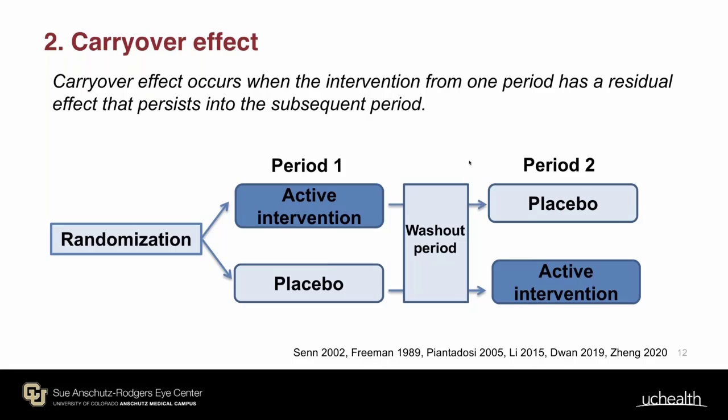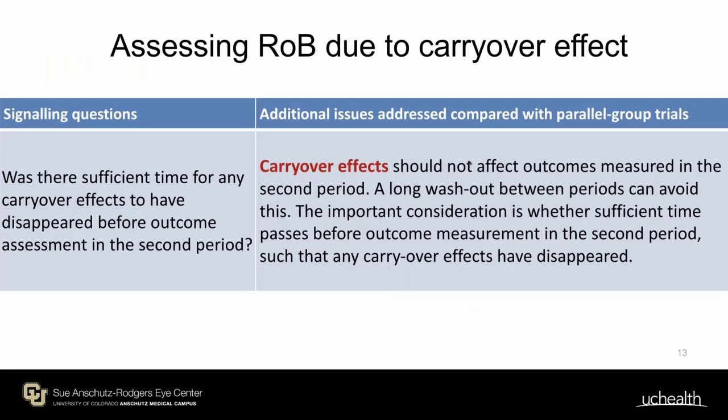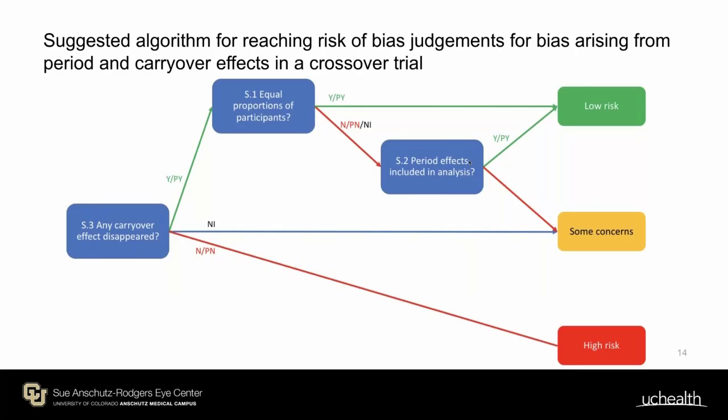When assessing bias due to carryover effect, you must consider whether there is a long enough washout period between the two periods, and whether sufficient time has passed before outcome measurement in the second phase such that any carryover effects have disappeared. Here is one suggested algorithm for reaching a risk of bias judgment for bias arising from period and carryover effects: if carryover effect is present, it is high risk. If not, consider the period effect — whether equal proportions of participants are assigned to AB versus BA sequences. If the allocation ratio is not one-to-one, look for whether period effects are included in the analysis. If yes, that leads to low risk of bias.